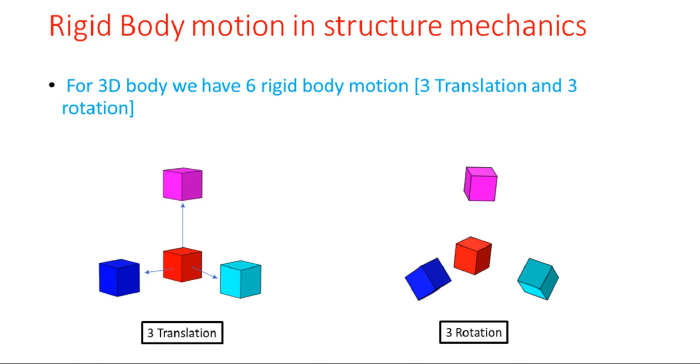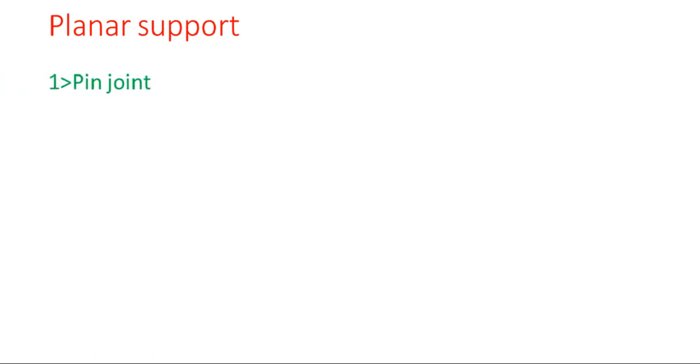Structural systems transfer their loading through a series of elements to the ground. Each connection is designed so that it can transfer or support a specific type of load or loading condition. So now we are going to discuss the different types of supports. The first one is the pin joint.